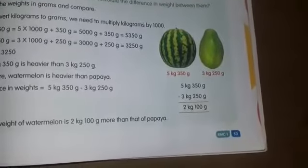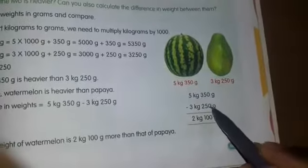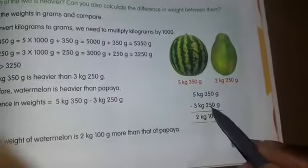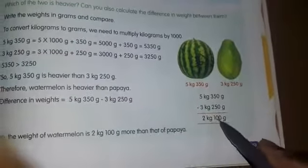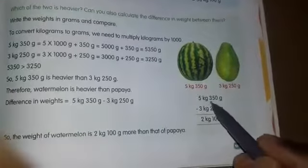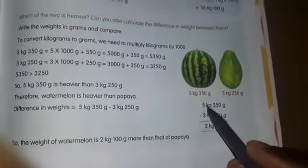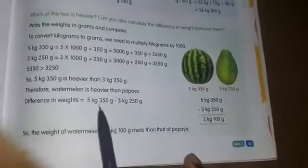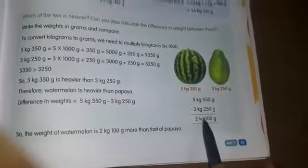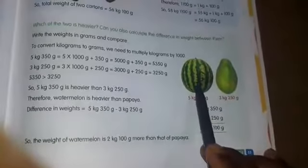By how much? We subtract: 5 kg 350 grams minus 3 kg 250 grams. 0 minus 0 is 0, 5 minus 5 is 0, 3 minus 2 is 1 for grams giving 100 grams. For kilograms: 5 minus 3 is 2. So the difference in weight is 2 kilograms 100 grams.